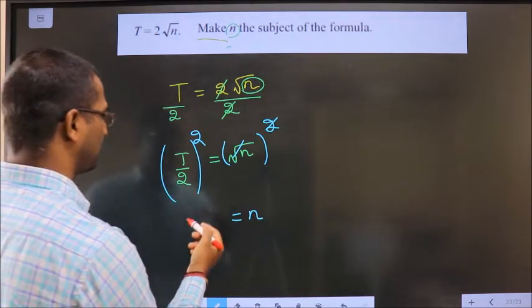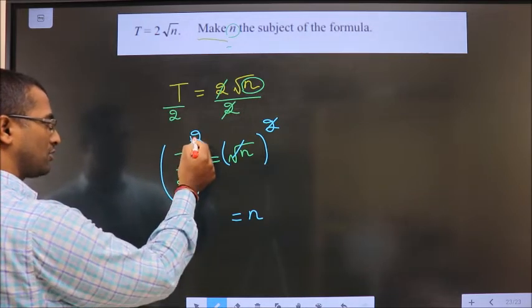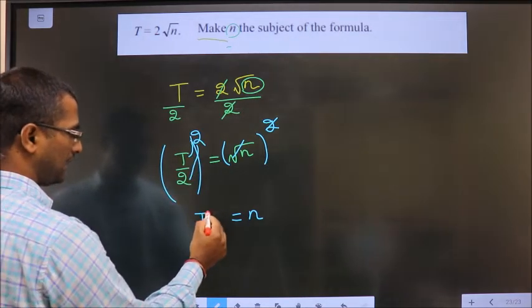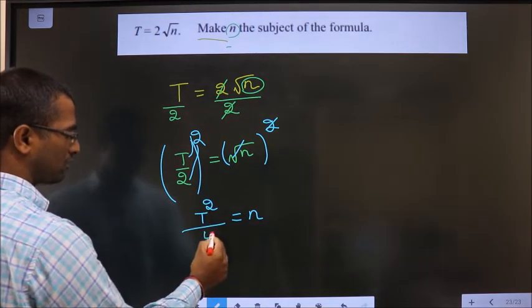And on this side, apply square to each. So square applied on T will be T squared by square applied to 2. 2 squared is 4.